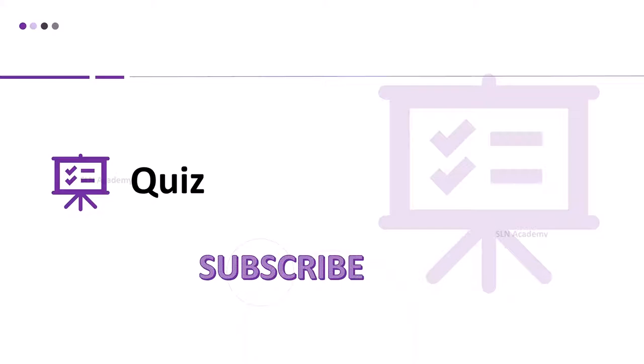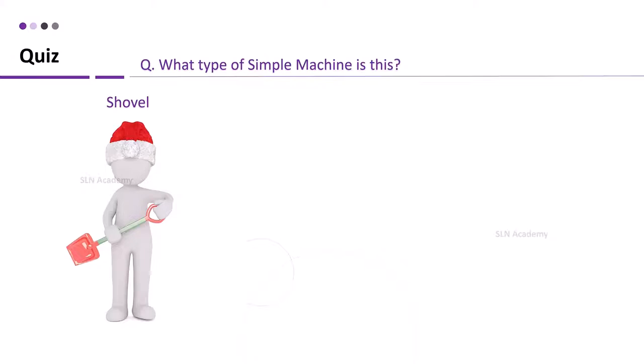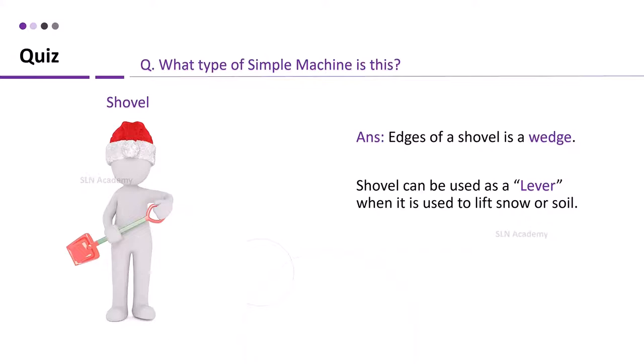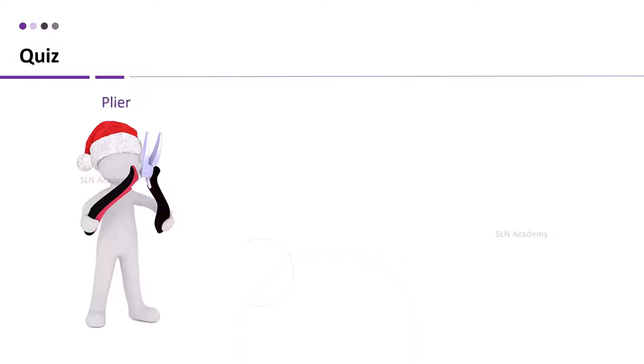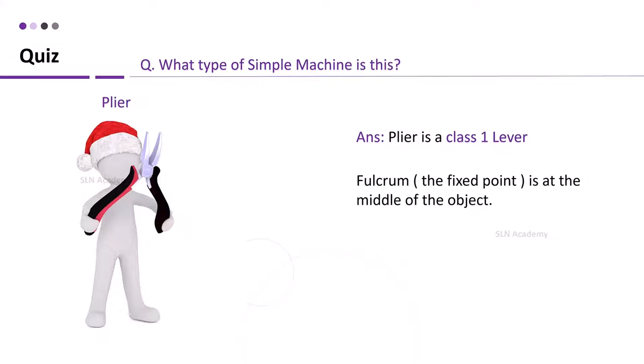Let us play a small game to check our understanding about simple machines. And don't forget to subscribe. Shovel, what type of simple machine is this? The answer is edges of a shovel is a wedge. Shovel can also be used as a lever which is used to lift snow or soil. Plier, what type of simple machine is this? The answer is plier is a class 1 lever. It is because fulcrum the fixed point is at the middle of the object.